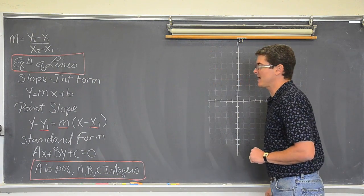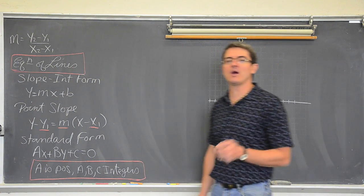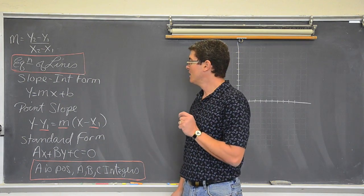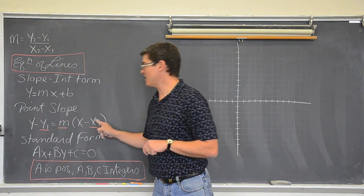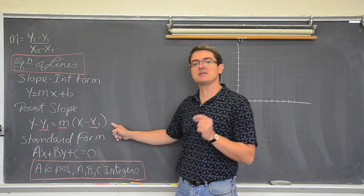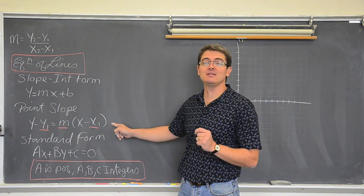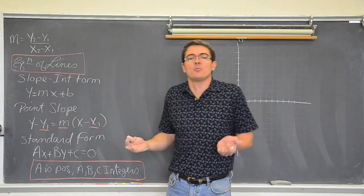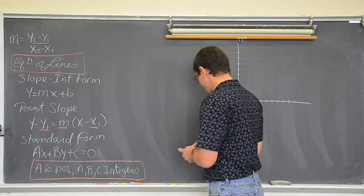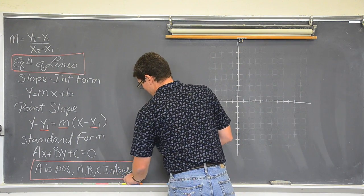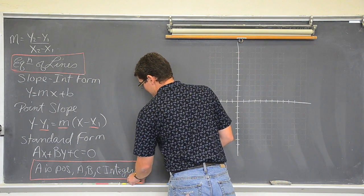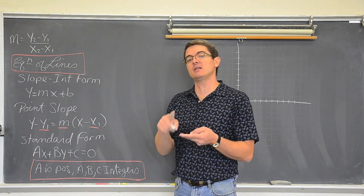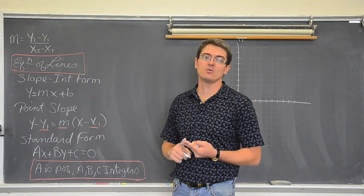We are going to pick back up with some more examples on how to come up with equations of lines given just a minimum of information. The point-slope form of a line tells us the absolute minimum we need to write the equation of a line — a point x and y and a slope. In the last example we were given two points, we found the slope, and then we used the point-slope form to find the equation of a line.